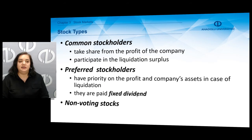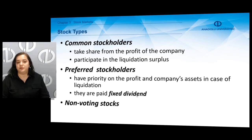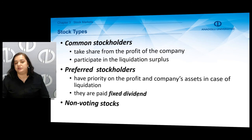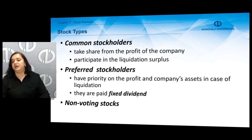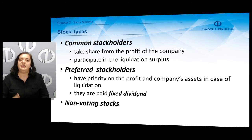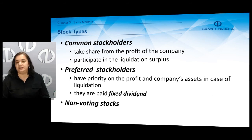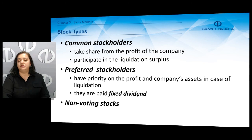We can classify stockholders as common stockholders and preferred stockholders. Common stockholders share in the profit of the company and participate in the liquidation surplus — they are the residual owners. Their right to liquidation comes after the creditors and the preferred stockholders. Preferred stockholders have higher priority on the company's profits and assets in case of liquidation and are paid a fixed dividend, whereas there is no fixed dividend for common stockholders. There can also be non-voting stocks that give the owner no voting right.